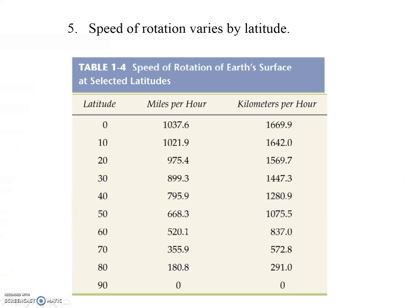Lastly, our fifth point regarding the rotation of the Earth on its axis is that the speed of rotation varies by latitude. This is interesting. The Earth is rotating at different speeds depending on the location or latitude you are on Earth. That's probably something you've never considered before.